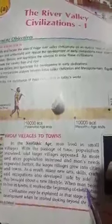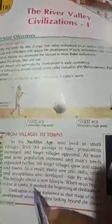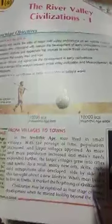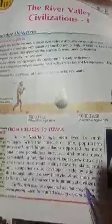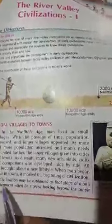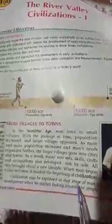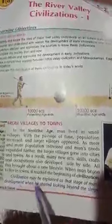Man, who was living in the forest and then in villages, had now come to live in towns and cities. This period of man is known as civilization — he was more civilized than in earlier life. Civilization may be explained as the stage of man's development when he started looking beyond the simple satisfaction of basic needs of food, clothing and shelter.